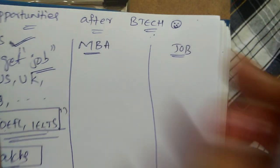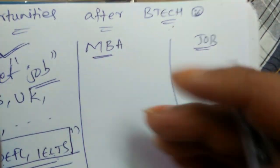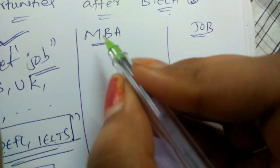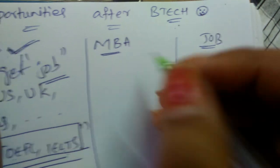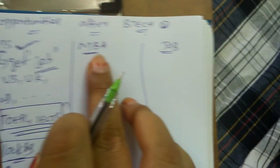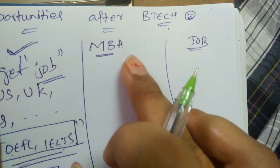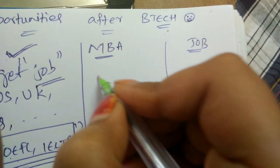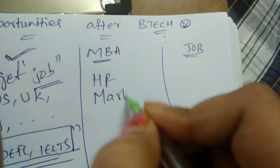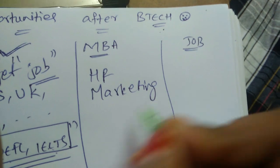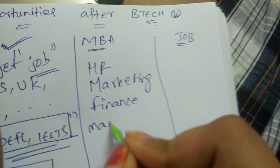Next is MBA. Coming to MBA, MBA stands for Masters in Business Administration. As the name suggests these two are the technical courses and this is business administration course. If you are interested in business side or if you are interested in HR or marketing or sales or finance or management or business side then you can happily go for MBA side.